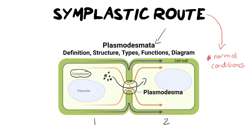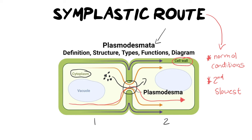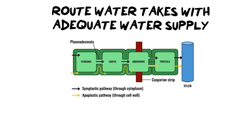When moving through the symplastic route — through the cytoplasm from one cell to the next — you are not going to move very quickly. This is the second slowest route. The slowest route would be the vacuolar route, where you move from one vacuole to the next. The fastest route is when you move through the cell wall, which we already covered in the apoplastic route. We use this route because we don't want to lose too much or too little water, since right now we're in normal conditions — not too hot, not too cold, just right.